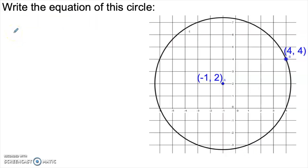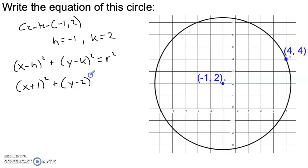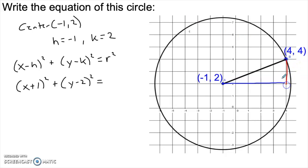What if I'm given a picture and asked to write the equation of the circle? Since the center is (-1, 2), h is -1 and k is 2. Any circle has the equation (x - h) squared plus (y - k) squared equals r squared. Plugging in h and k gives us (x + 1) squared plus (y - 2) squared. The only thing we don't know is the radius — but we actually just need the radius squared to finish the equation.